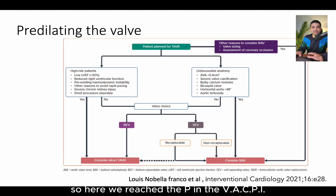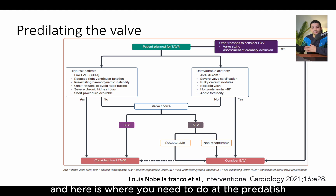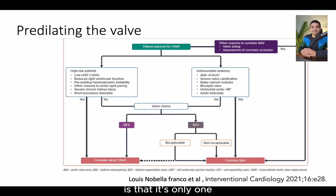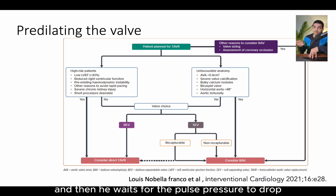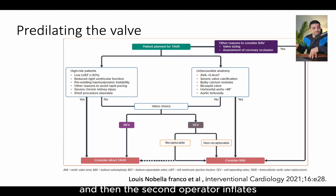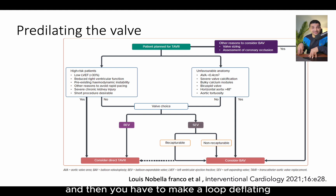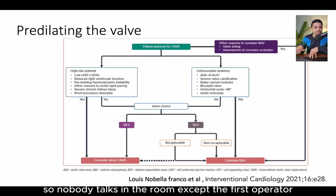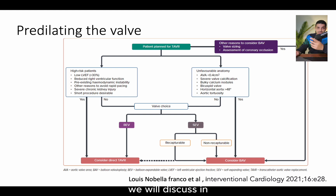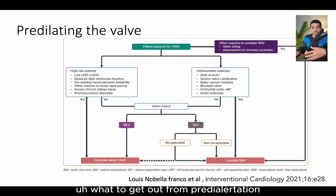Here we've reached P in the VASCP, where you do the predilatation. One important thing is that only one operator commands at this stage. The first operator gives the order: rapid pacing on, then waits for the pulse pressure to drop to stabilize the balloon, then says inflate. The second operator inflates, then the first operator says deflate — and you make a loop deflating. After it deflates, get the balloon out, then say stop pacing. Nobody talks in the room except the first operator. We will discuss in further videos what to learn from predilatation or post-dilatation.